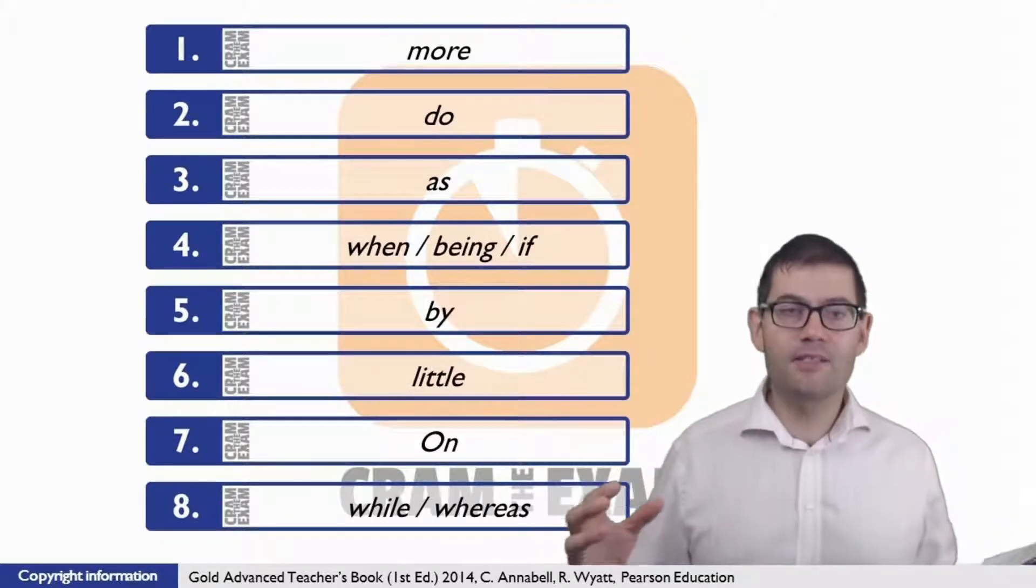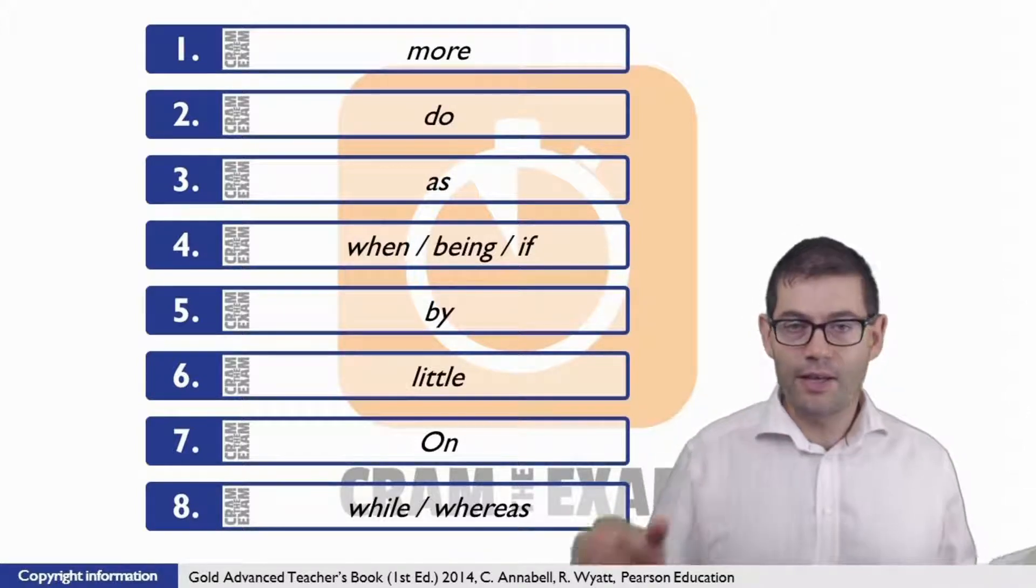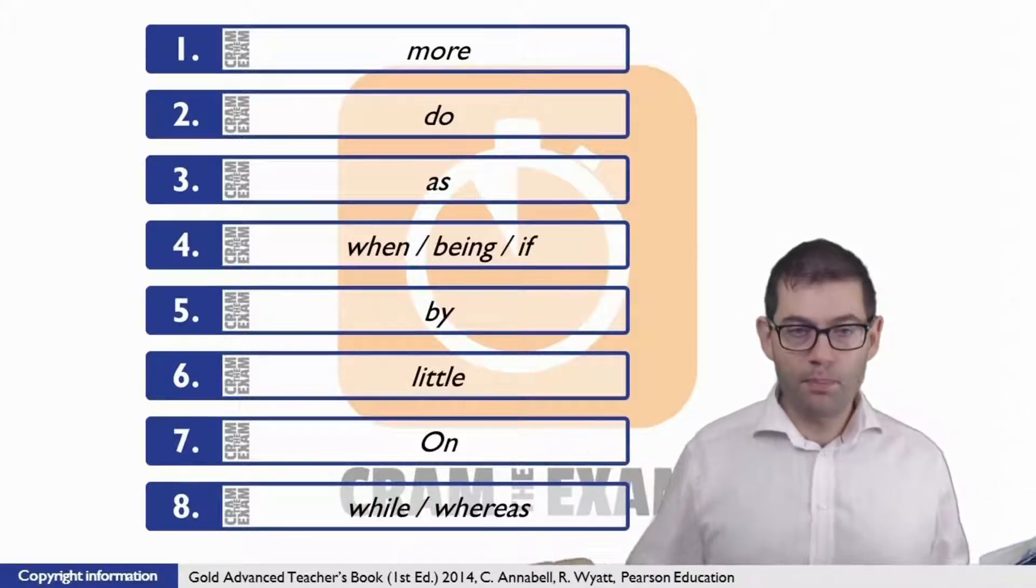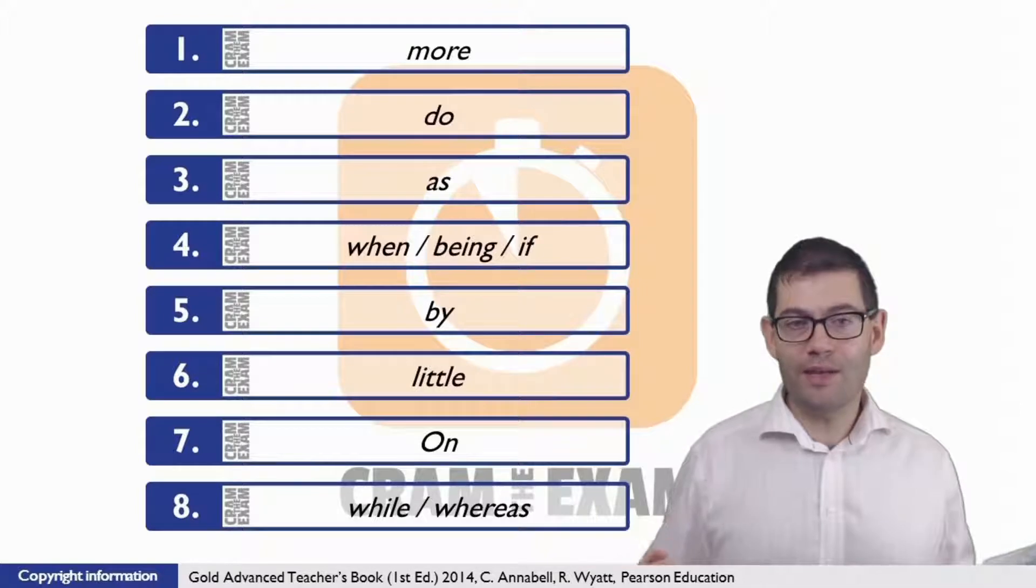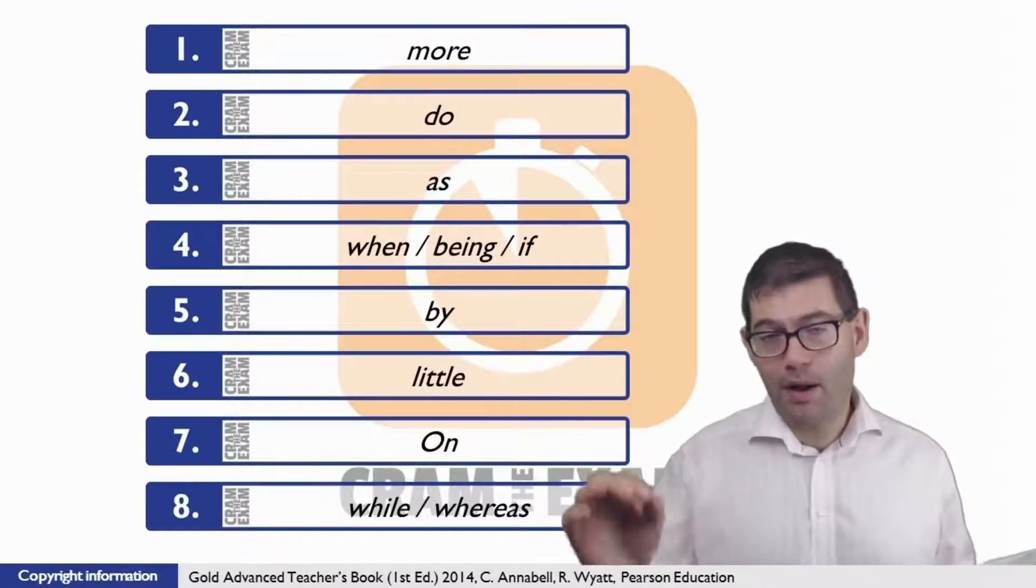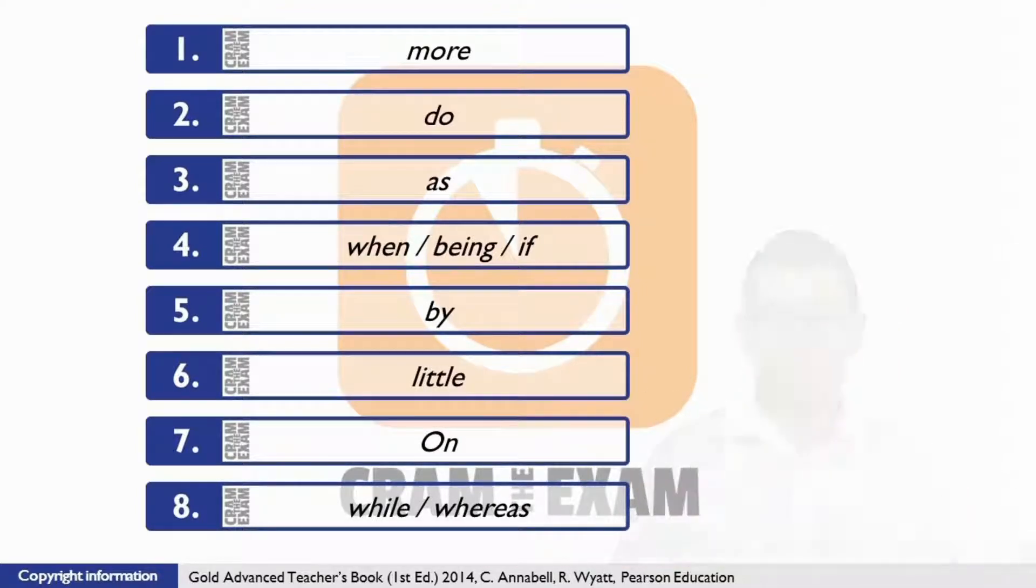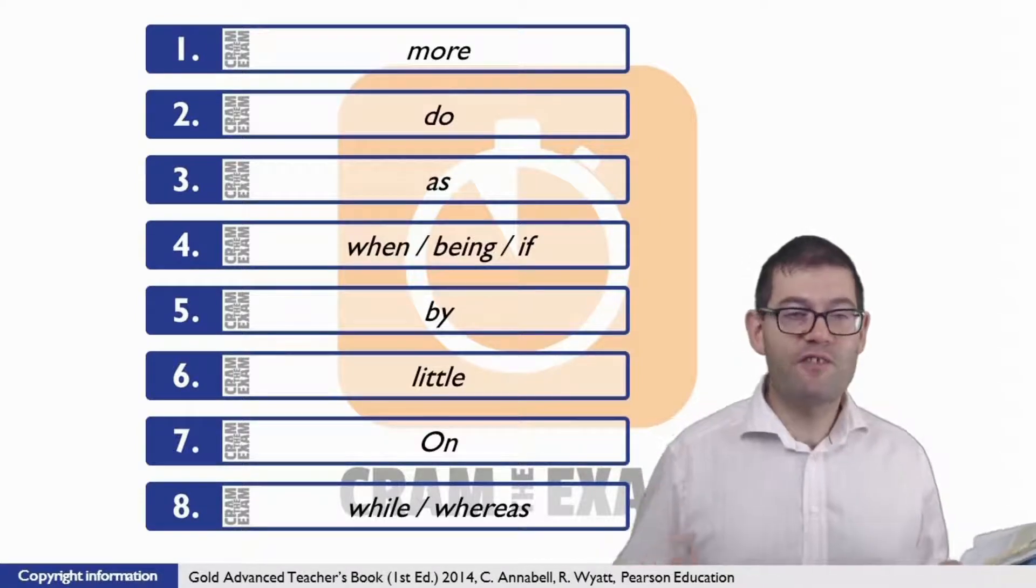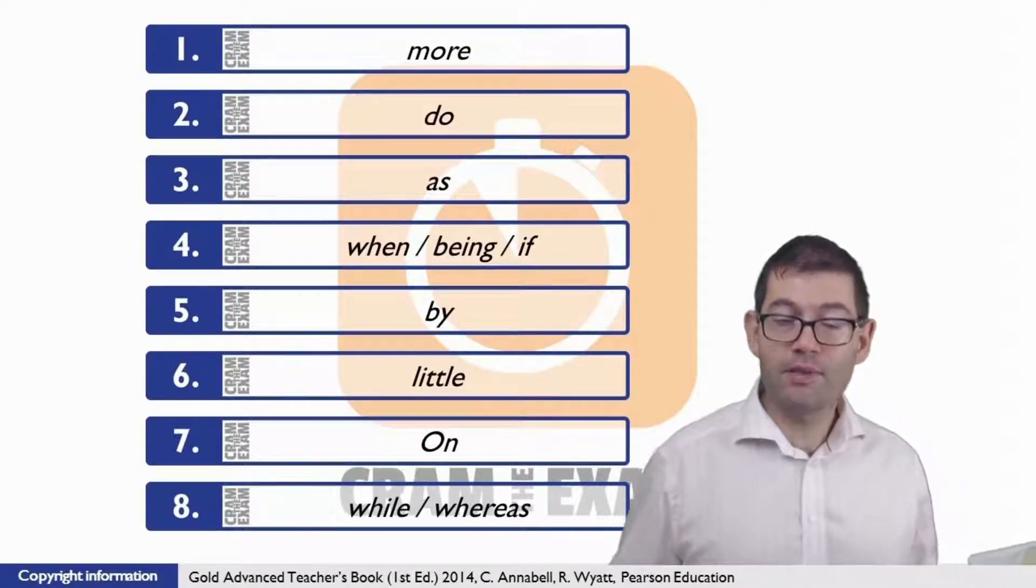For question number three, what we need here is the preposition which begins the beginning of this paragraph and which collocates with 'part'. And the preposition that we need is 'as' - as part of the experiment.